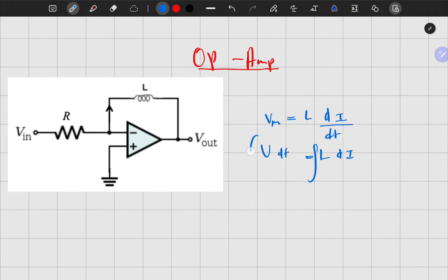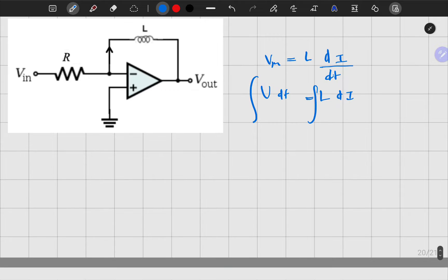Then I can integrate both sides, and if I do, here I will get L times I, or just let me say I, and then I'll put one over L on this side and integral of V dT.